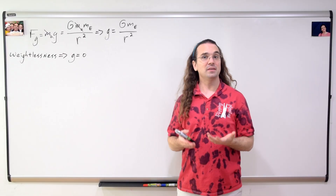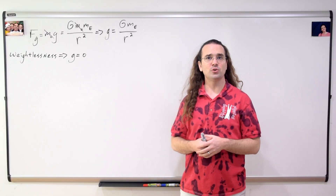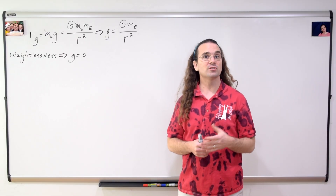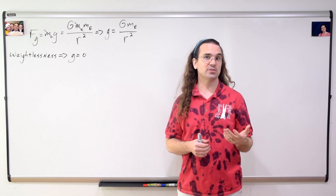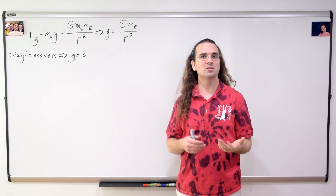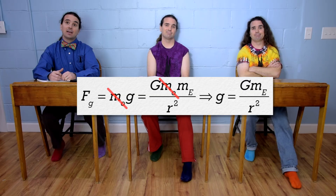And we get the acceleration due to gravity equals the universal gravitational constant times the mass of the Earth, all divided by the square of the distance between the center of mass of the Earth and the center of mass of the object.